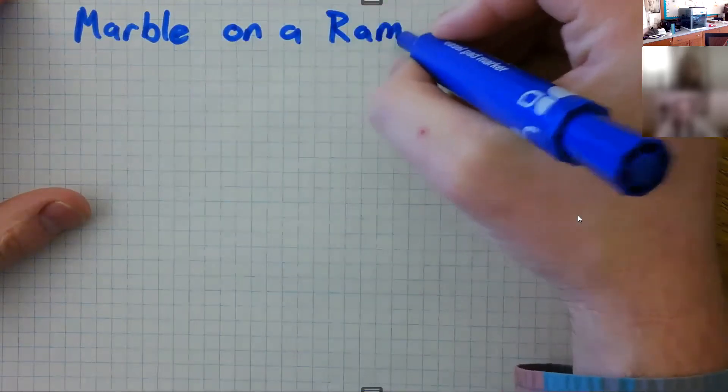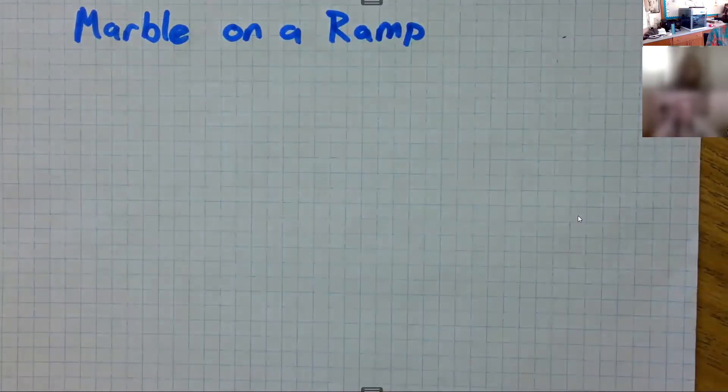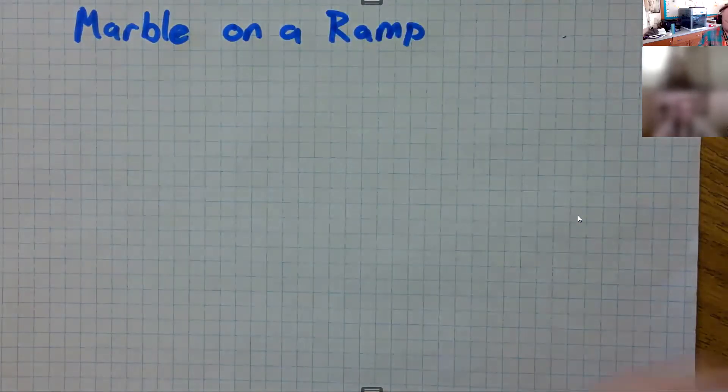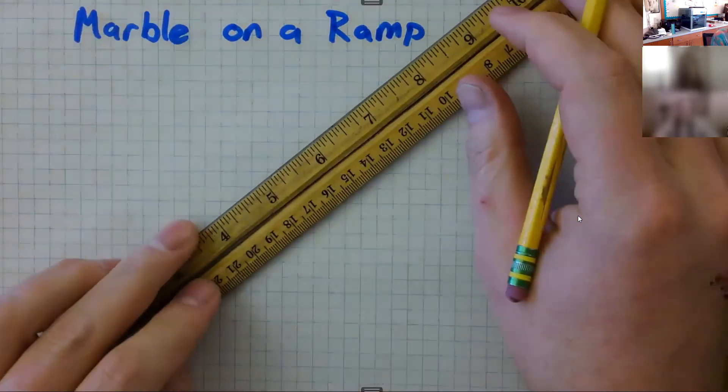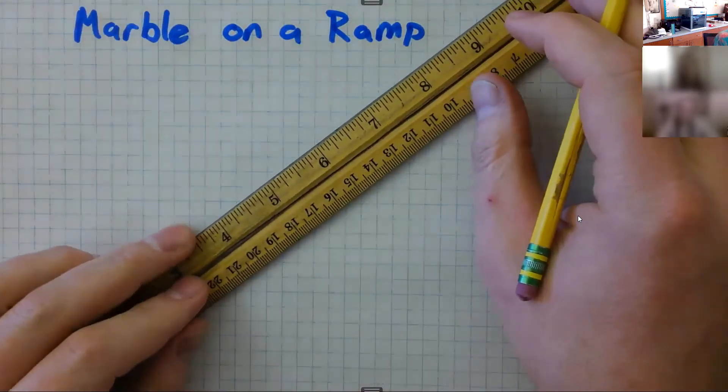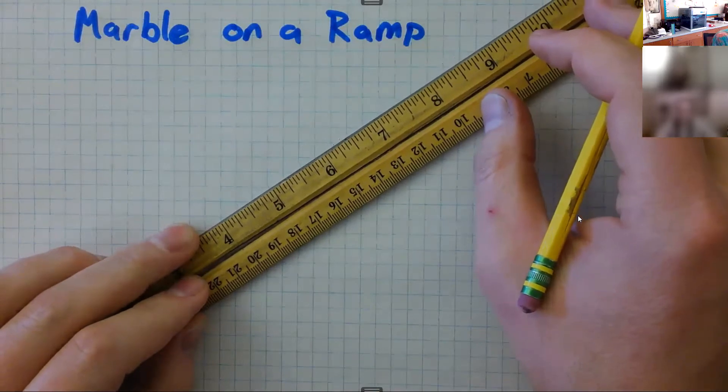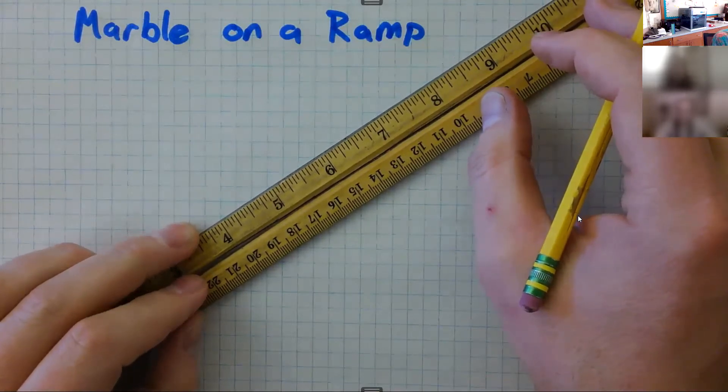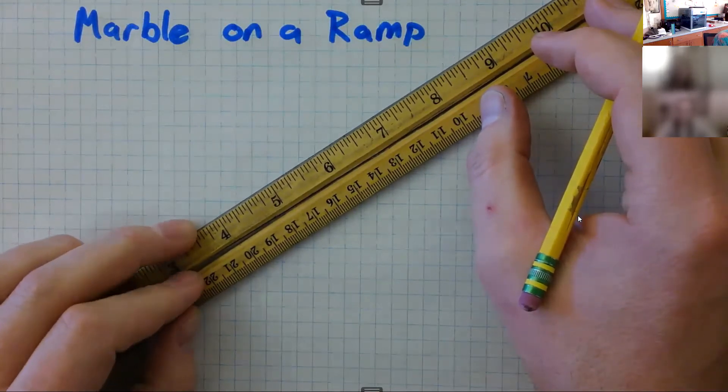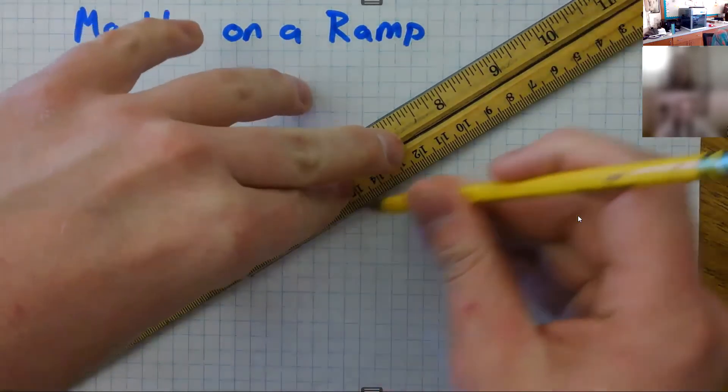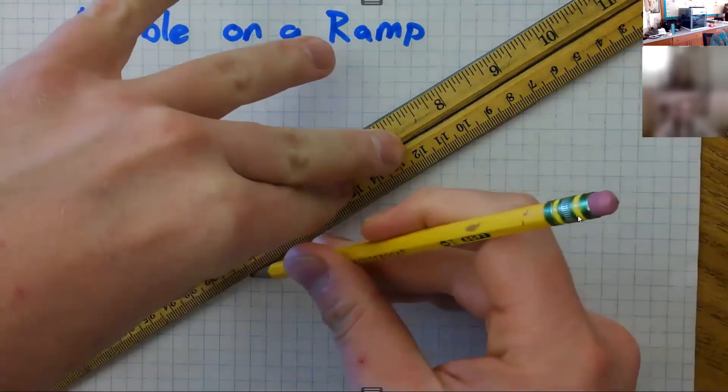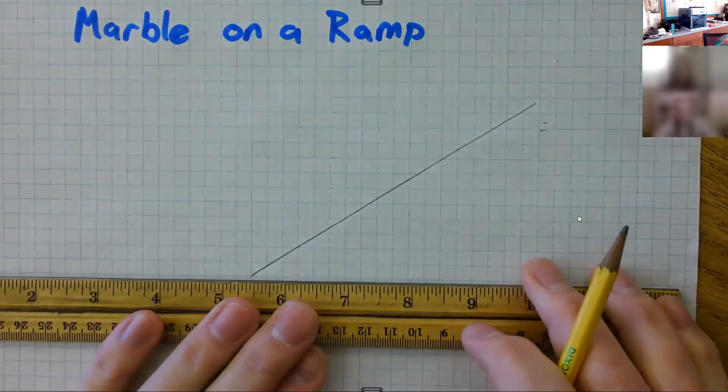Alright, so here's an example of a marble on a ramp. This same example would apply to anything going down a ramp, so a car rolling down a hill, a roller coaster, a marble run, anything like that. The forces are basically the same, and we're going to look at two forces affecting this marble going down a ramp.